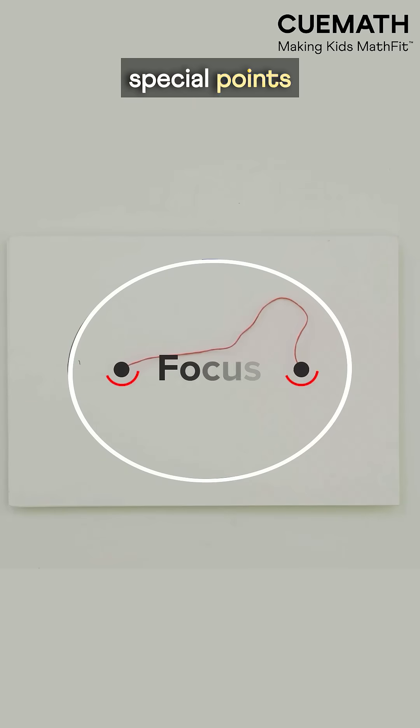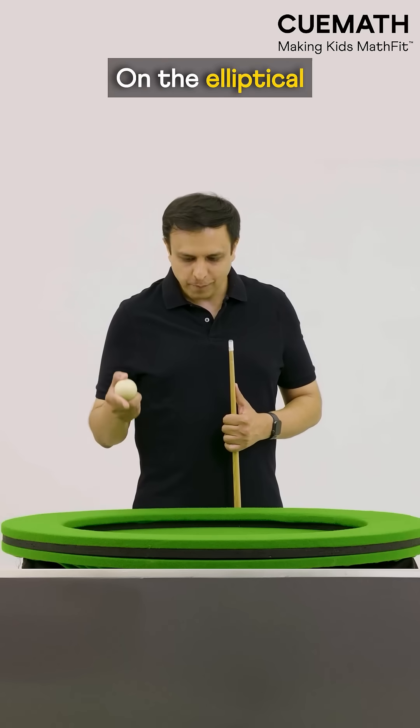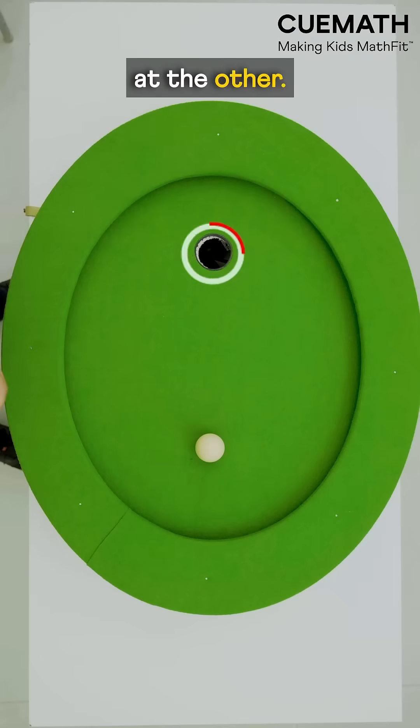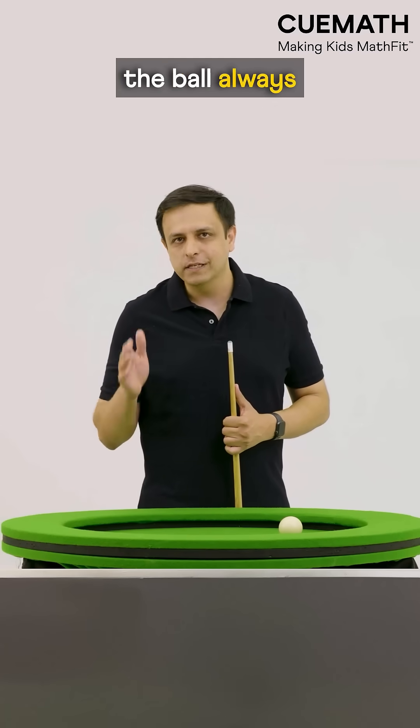Each of these special points is called a focus. On the elliptical pool table, the ball was placed at one focus and the hole at the other. And that's what makes the ball always land in the hole.